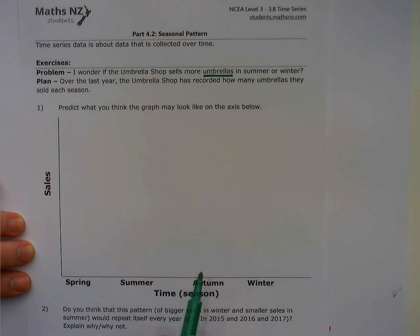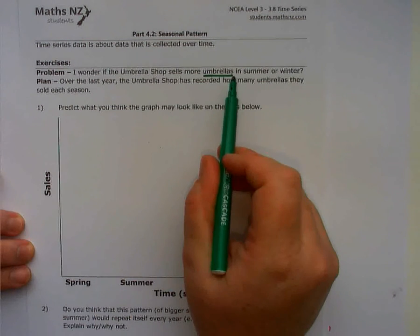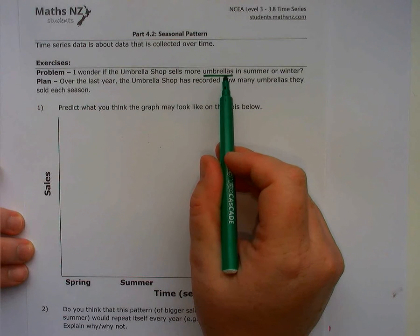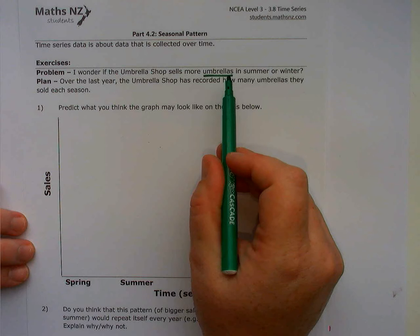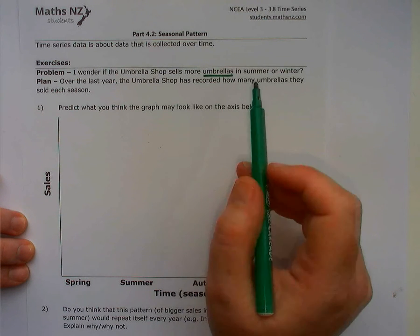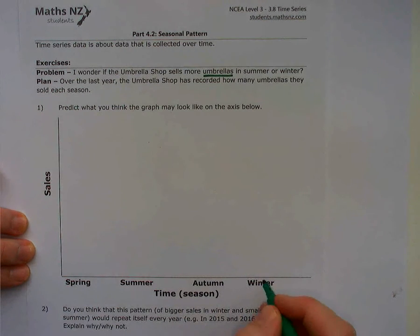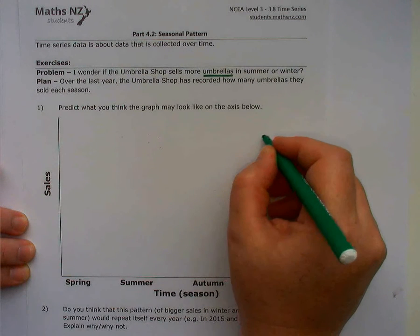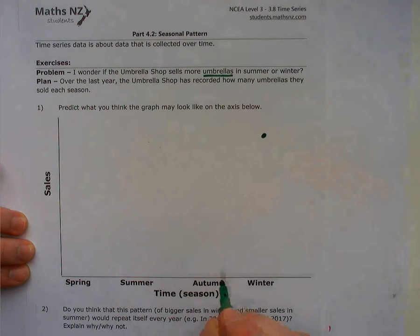So what we want to think about is umbrellas, what seasons do they actually get used in the most? We know that they get used in rain a lot, so we know that in winter there's a lot of rain. So I'm going to expect that there are high sales of umbrellas in winter.